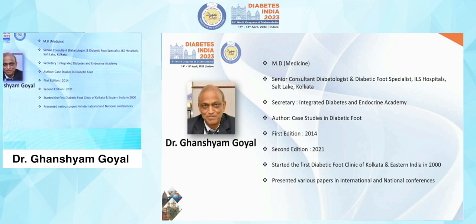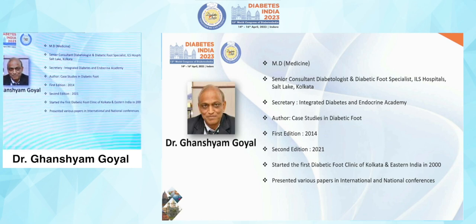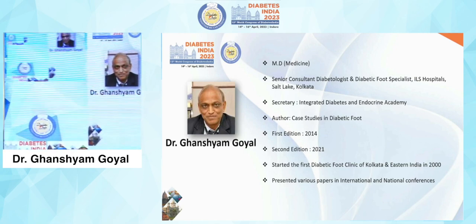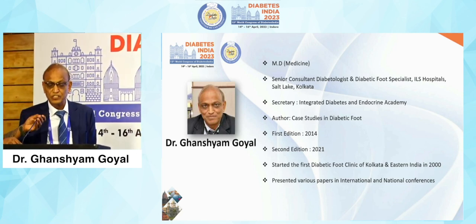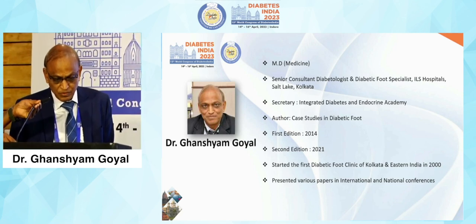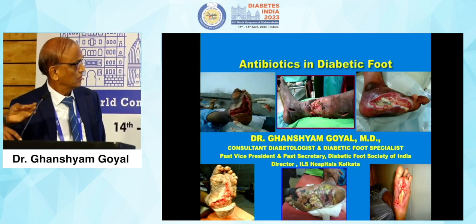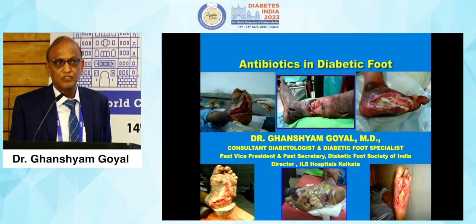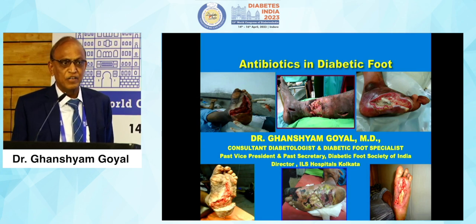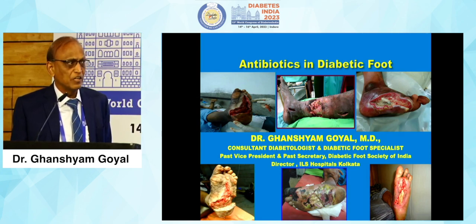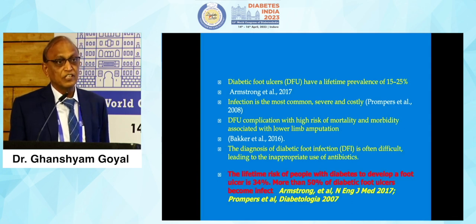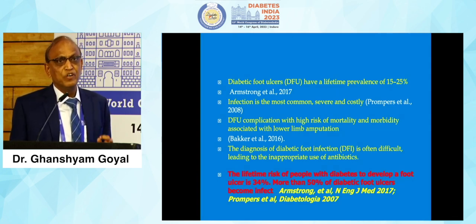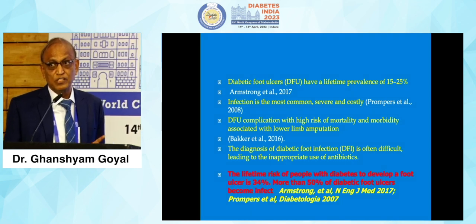Good evening, chairpersons. As Dr. Das has already said, the context of diabetic foot as neuropathy, peripheral vascular disease, and diabetic foot infection — this is the triad which causes the major amputations. As he has already mentioned, the lifetime risk of people with diabetes to develop a foot ulcer is 34%, meaning every one patient out of three is going to develop a diabetic foot ulcer in their lifetime.